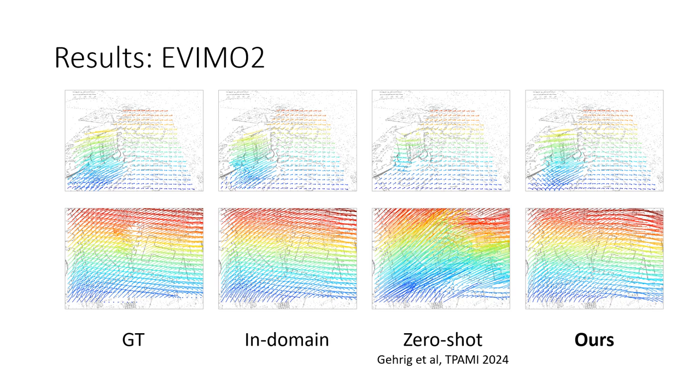Evaluation is performed on EVIMO2, a dataset providing full poses and object models of several independent moving objects. Our model shows the best results among methods not using ground truth data in the target domain. While we provide in-domain results for EVIMO recorded with a motion capture system, ground truth is not available in many real use cases.